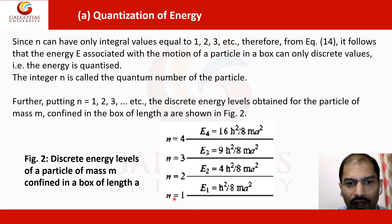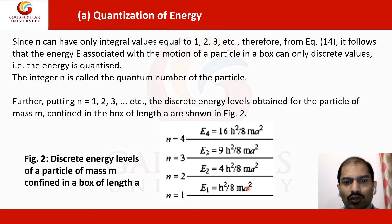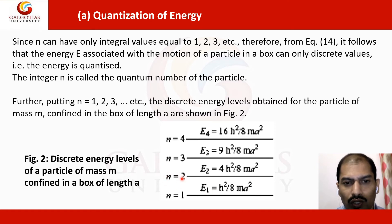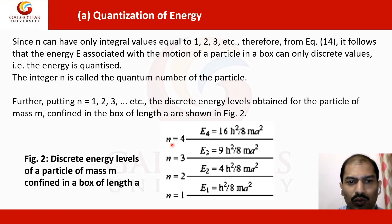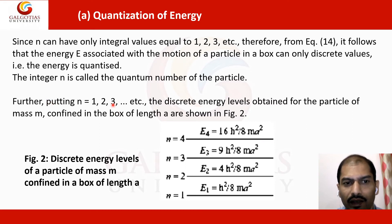For n = 1: E₁ = h²/(8ma²). For n = 2: E₂ = 4h²/(8ma²). For n = 3: E₃ = 9h²/(8ma²). For n = 4: E₄ = 16h²/(8ma²). By substituting different quantum numbers into the energy equation, discrete energy levels are obtained for the particle in the one-dimensional box.